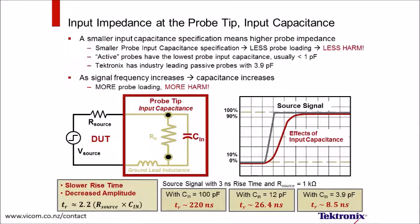One of the most critical probe specifications that is almost always overlooked is the input capacitance. Many times users will focus on the 10 megaohm input resistance specification, but the loading of greater concern is the capacitance at the probe tip. For low frequencies, this capacitance has a reactance that is very high and the loading is not as much, but as frequency increases, the probe's input impedance goes down and the loading is much greater. A first-order equation shows that a larger input capacitance will result in significantly slower rise time and lower bandwidth.